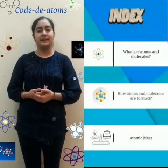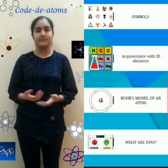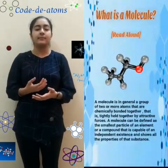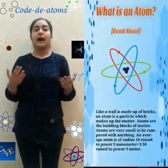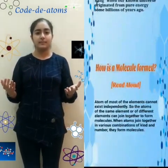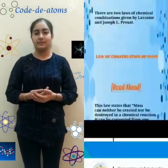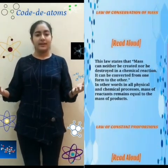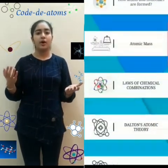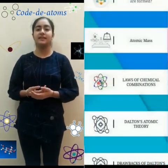As we click on Start Learning, an index page appears with all the topics from the chapter. Topics like 'What are atoms and molecules' cover the definition of atoms and molecules. 'How are atoms and molecules formed' carries information about their formation. Atomic mass has the definition of atomic mass. Laws of chemical combination explains both the law of constant proportions and the law of conservation of mass. Dalton's atomic theory postulates are mentioned in the next slide.